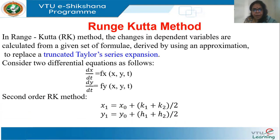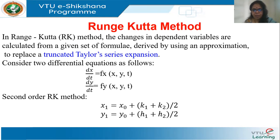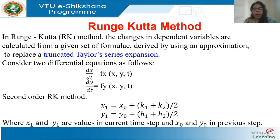Now, first we will take up the second-order Runge-Kutta method. The updation is as follows: x1, the variable x at the next time step, is equal to x0 — the variable at the current time step — plus (k1 + k2) / 2. Similarly, y1 is updated based on y0 plus (h1 + h2) / 2. So k1, k2, h1, h2 are simply the names of the coefficients.